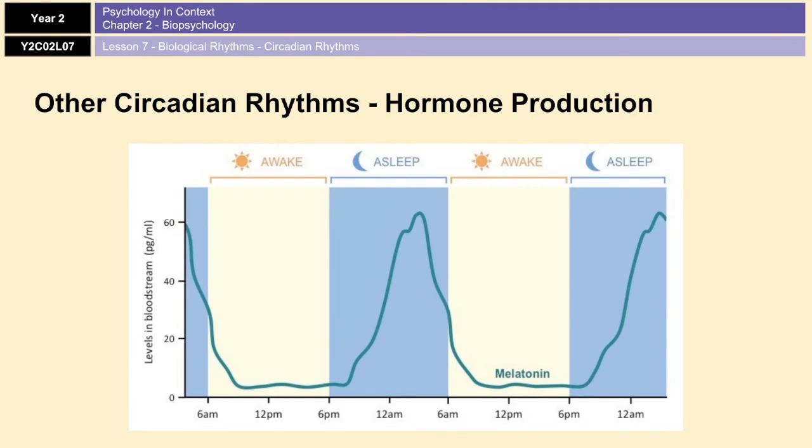Another circadian rhythm, which is important for sleep and wake, is hormone production. For example, the production and the release of melatonin from the pineal gland in the brain. The peak levels of melatonin production occur during the hours of darkness. By activating chemical receptors in the brain, melatonin encourages feelings of sleep. So when it's dark, more melatonin is produced, and then when it's light again, the production of melatonin drops, and the person becomes awake and becomes more alert.